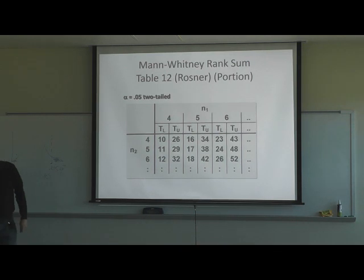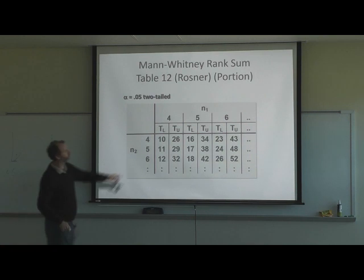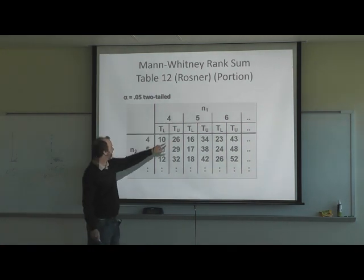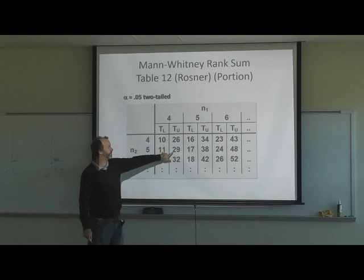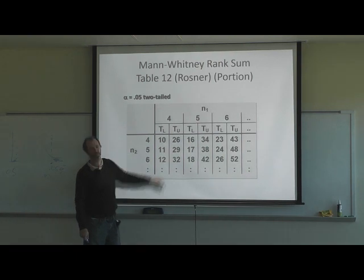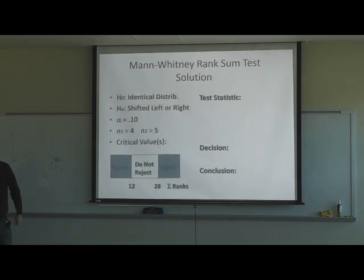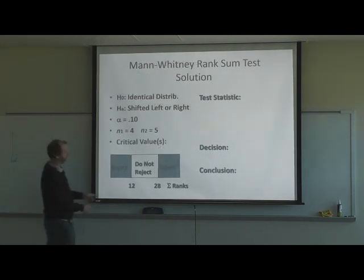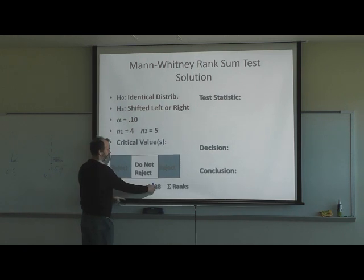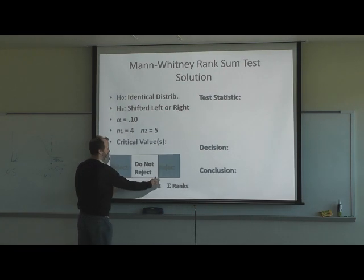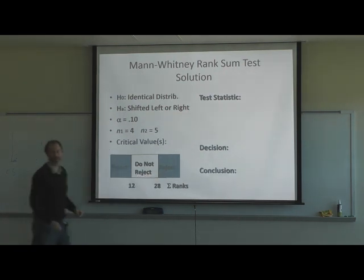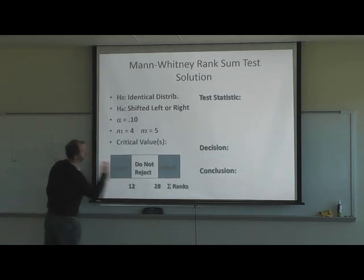Our n1 was 4 and n2 was 5. With n1 being 4 and n2 being 5, the range we're looking for is between 11 and 29. If anything falls between 12 and 28, we don't reject. If it's outside 11 to 29, we reject the null hypothesis.